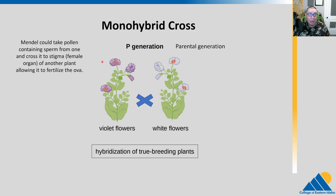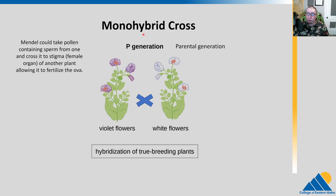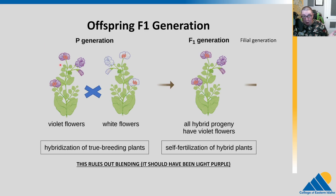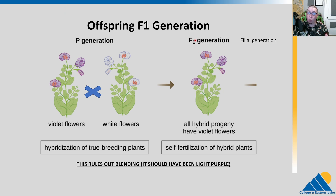Mendel could take pollen from one plant — that contains the sperm — and put it on the stigma, the female organ of the other one, which will then fertilize the ova down in there. We cross the parental generation. We started with true breeding purple and true breeding white, we cross them, and we get their offspring. This is the first filial generation or the F1 generation.